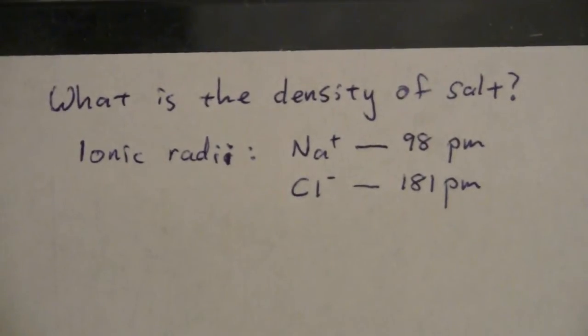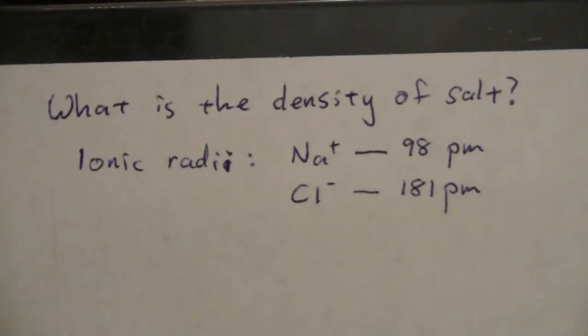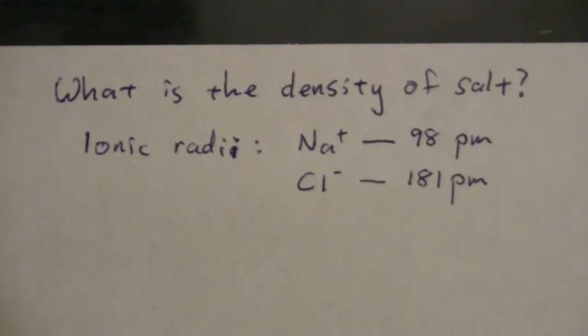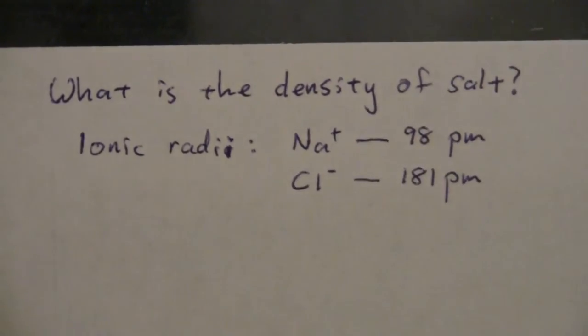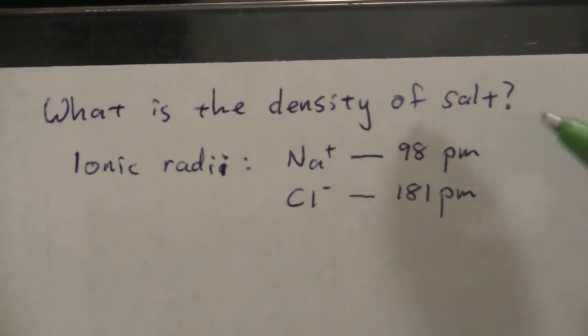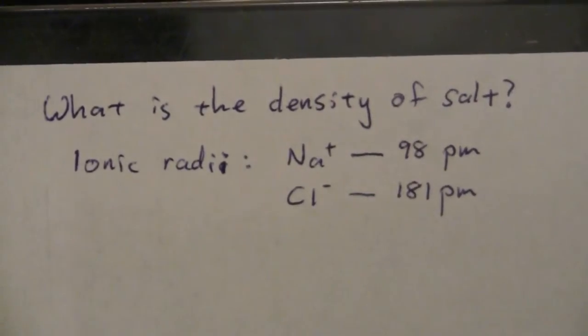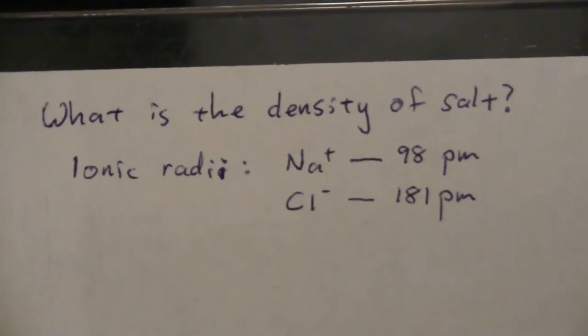This is question number nine from the discussion questions for chapter 13. It's asking for the density of salt given the ionic radii for the sodium and the chloride ions